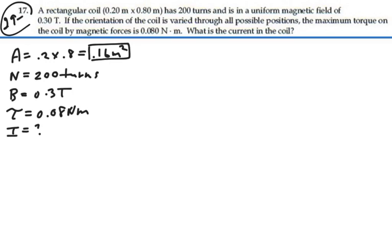We wish to find the current, and we're going to vary it through all possible positions so that we get maximum torque, which means our theta must be equal to 90 degrees for maximum torque.